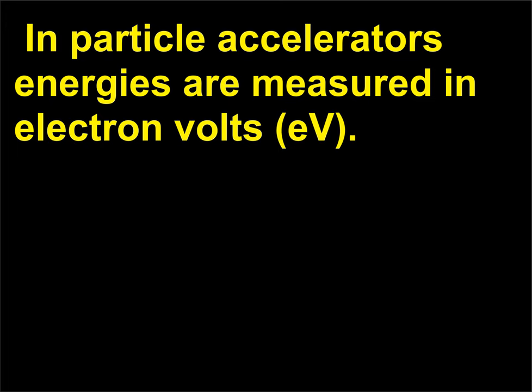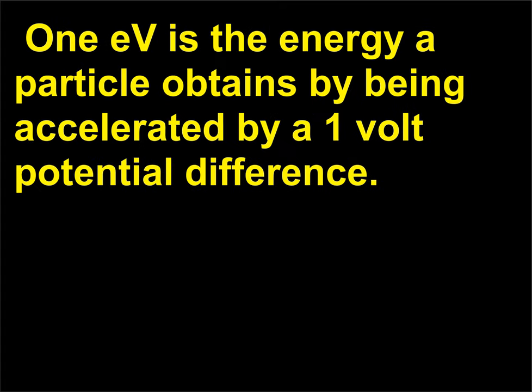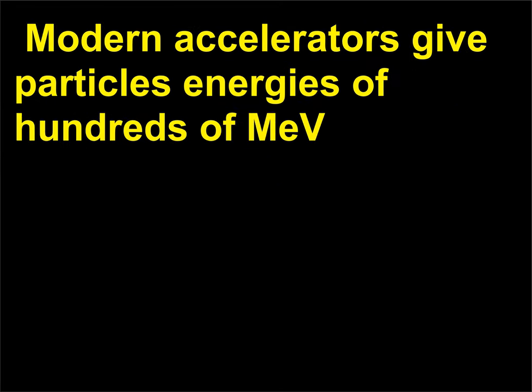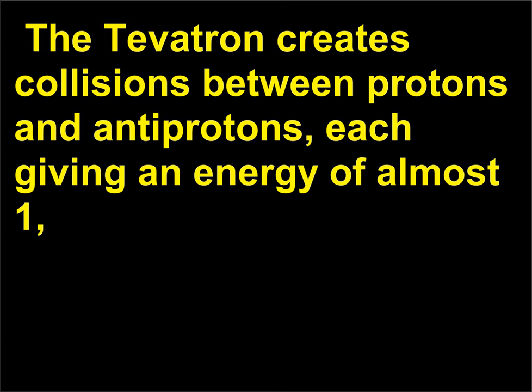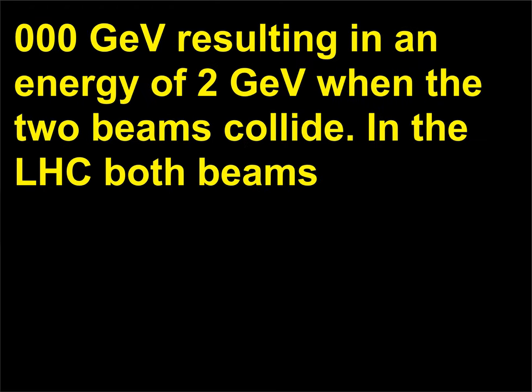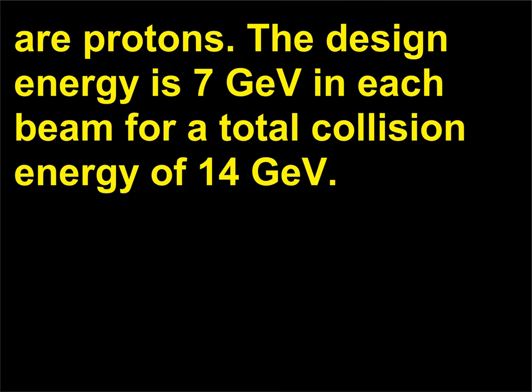In particle accelerators energies are measured in electron volts, eV. One eV is the energy a particle obtains by being accelerated by a one-volt potential difference. Modern accelerators give particles energies of hundreds of MeV, megaelectron volts, or GeV, billions of electron volts. The Tevatron creates collisions between protons and antiprotons, each giving an energy of almost 1,000 GeV resulting in an energy of 2 TeV when the two beams collide. In the LHC both beams are protons. The design energy is 7 TeV in each beam for a total collision energy of 14 TeV.